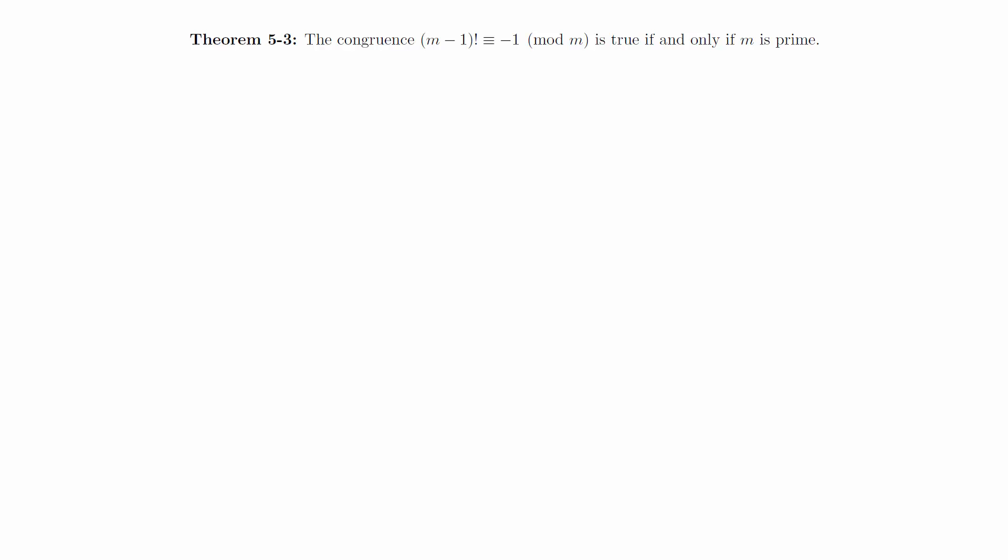Suppose that m is prime, and consider the numbers 1, 2, up to m minus 1. Since each of these is relatively prime to m, we know that if a is any of these numbers, that there exists a prime such that a times a prime is congruent to 1 mod m.